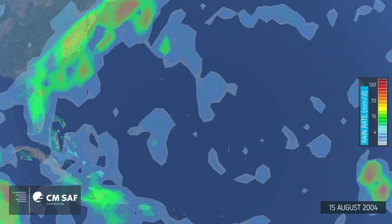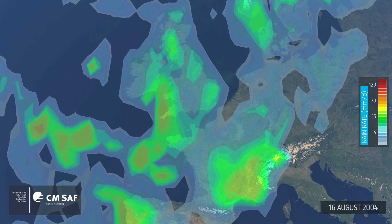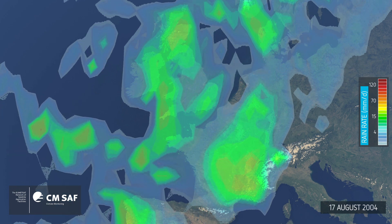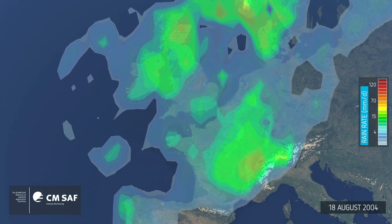We travel from the storms in the US to storms in Europe, and here we see flooding in Boscastle in the southwest of the UK.